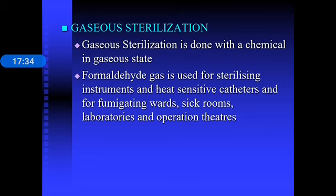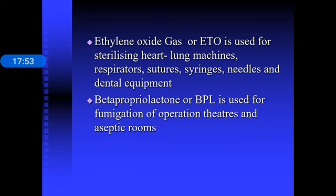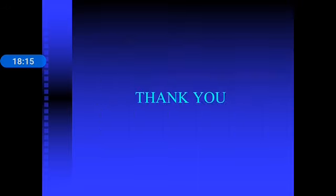Gaseous sterilization uses chemicals in the gaseous state. Formaldehyde gas is used for sterilizing instruments and heat-sensitive catheters, and for fumigating wards, sick rooms, laboratories, and operation theatres. Ethylene oxide (ETO) gas is used for sterilizing heart-lung machines, respirators, sutures, syringes, needles, and dental equipment. Beta-propiolactone (BPL) is used for fumigation of operation theatres and aseptic rooms. These are the various techniques of sterilization — physical and chemical.